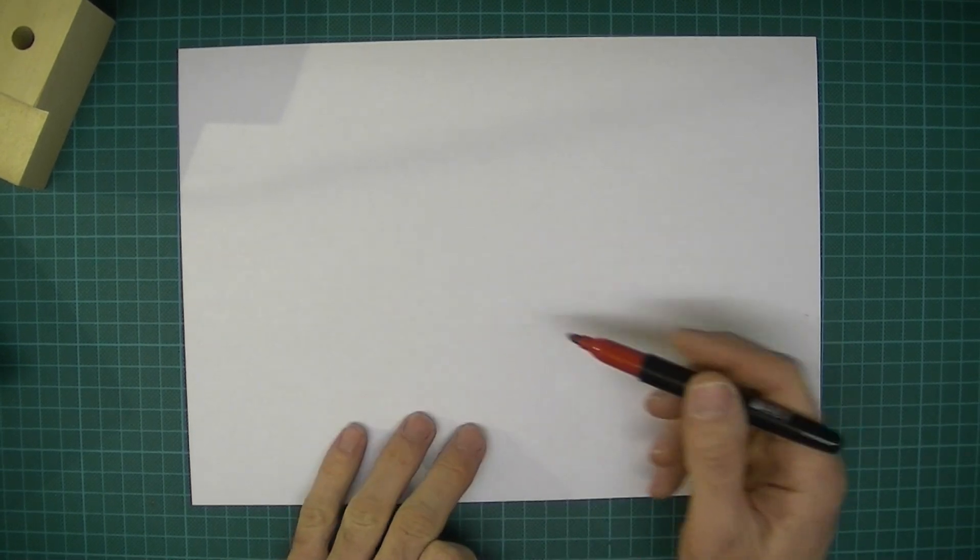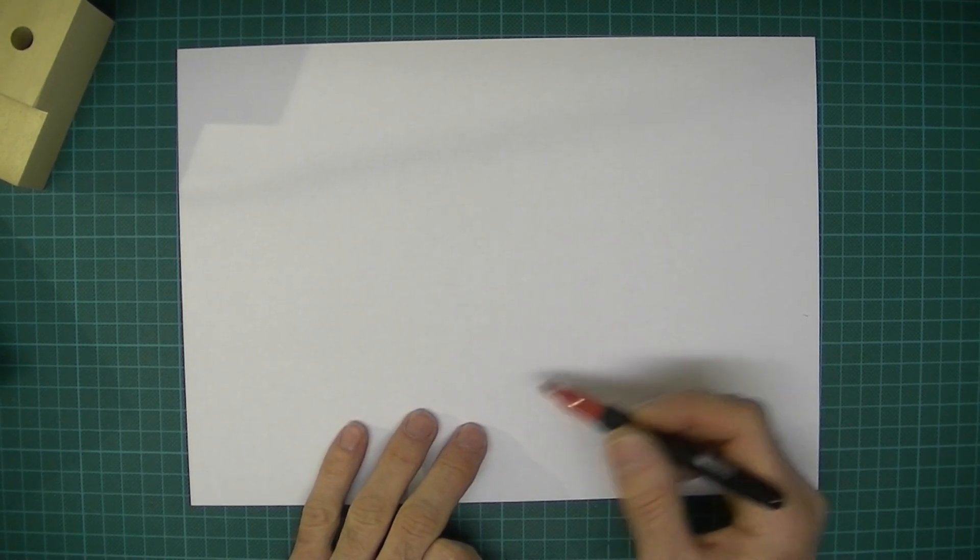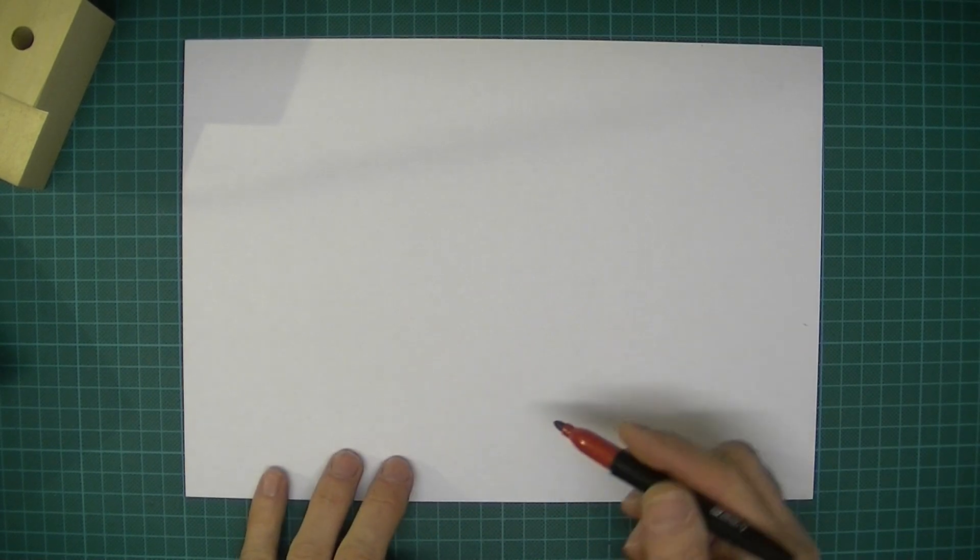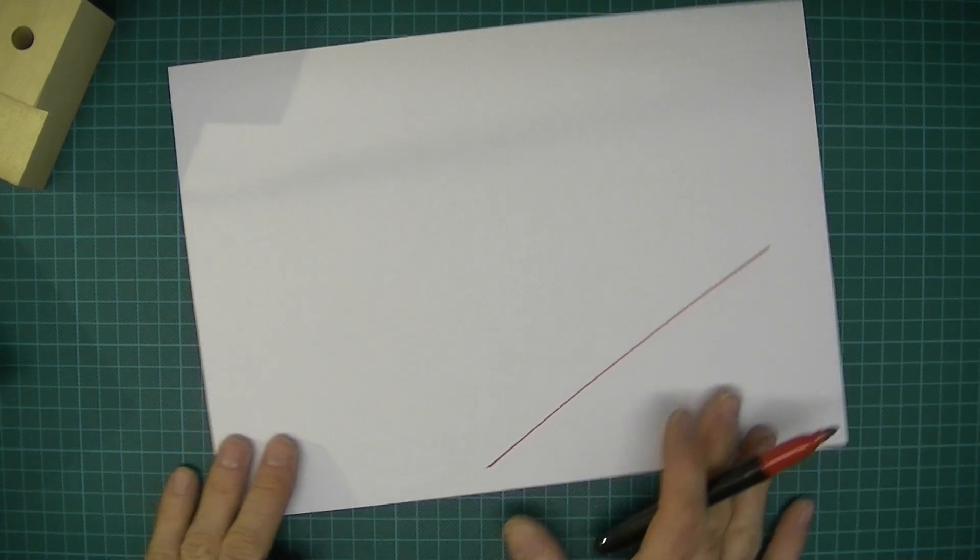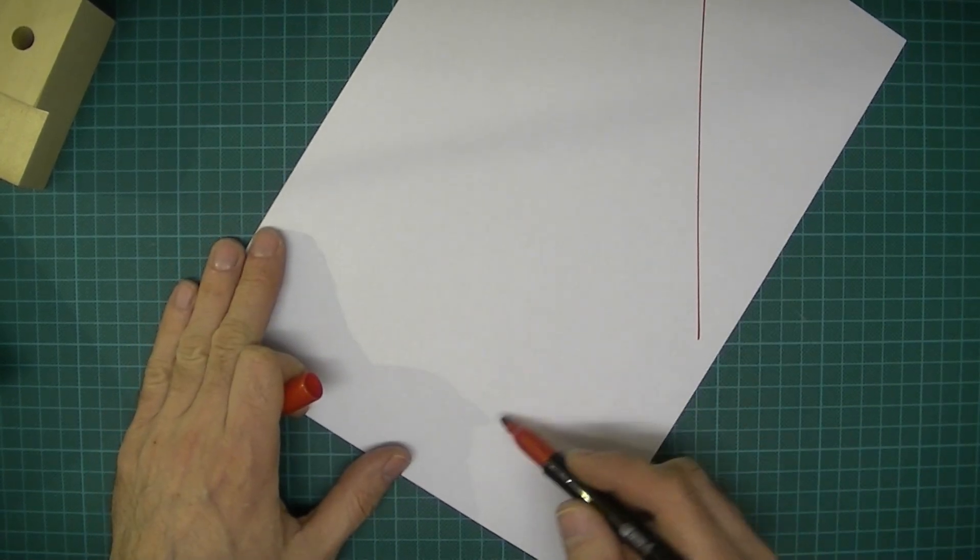Now if I were doing this for real, I would do it probably in pencil first with some construction lines, and then I would go over it with pen. But to make it easier for you to see, I'll do it all in pen right from the start.